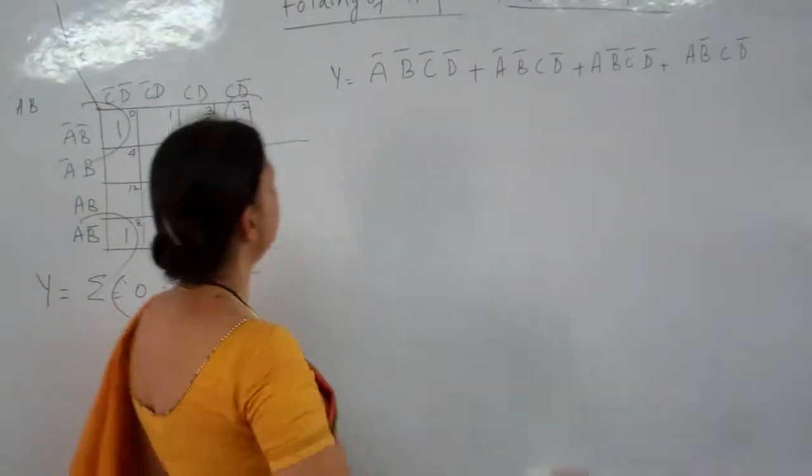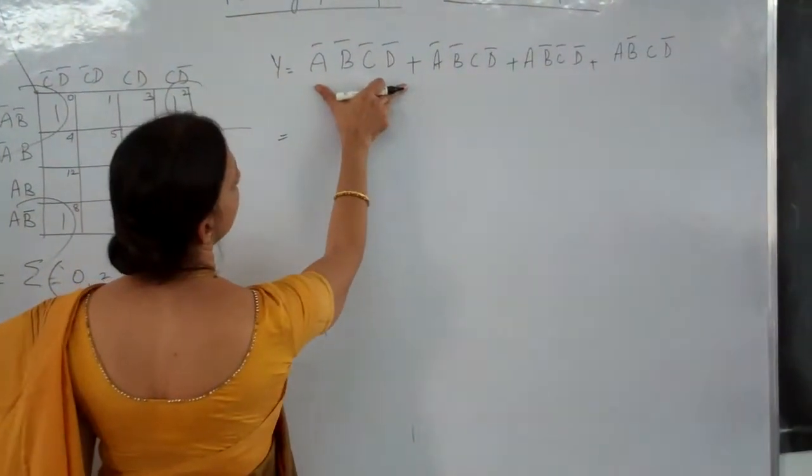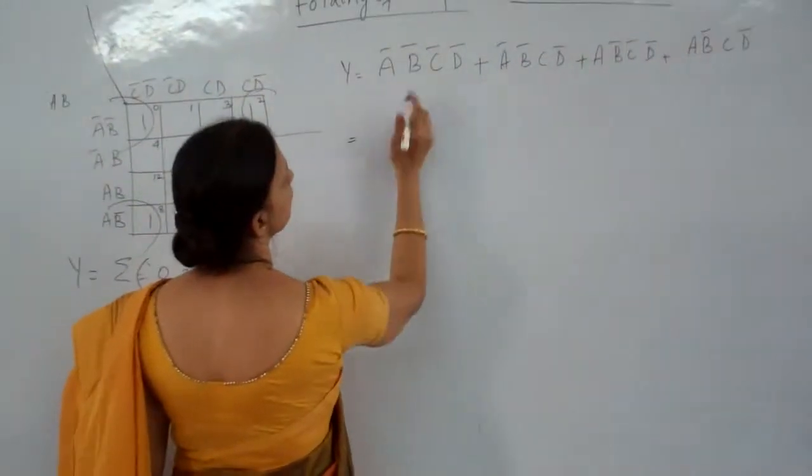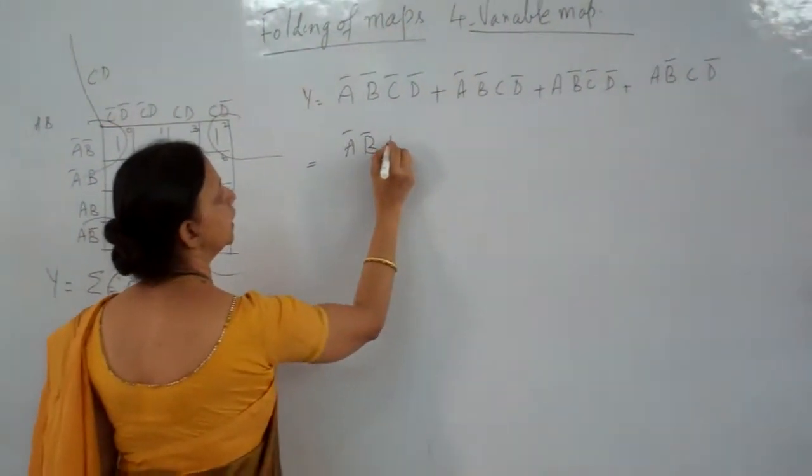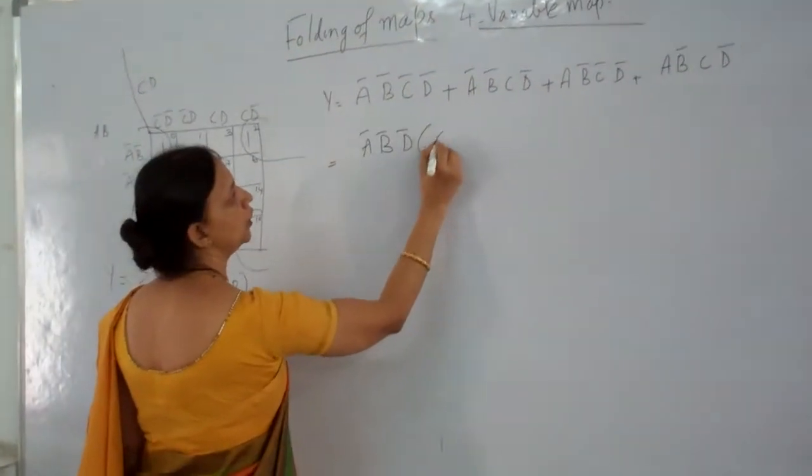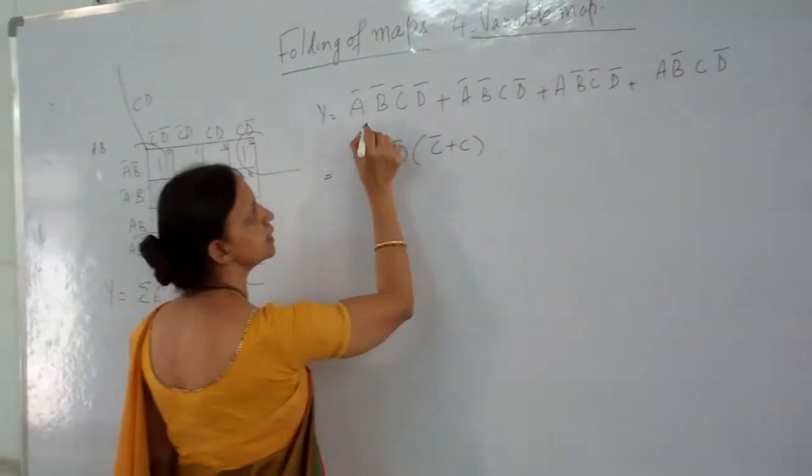Now how did you group them? What is common here between these two? A bar, B bar, D bar. Three terms are common. So what do you get? C bar plus C from these two.